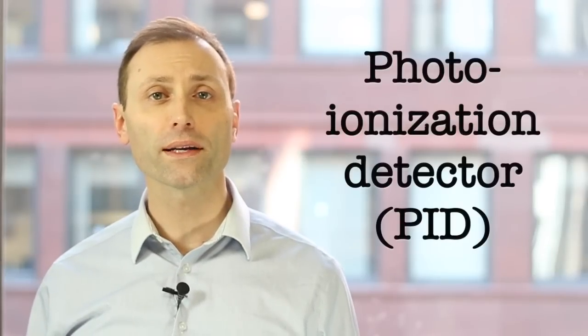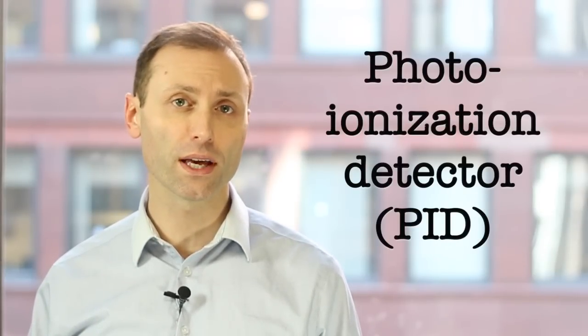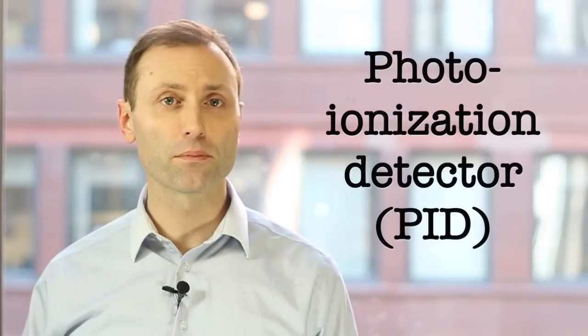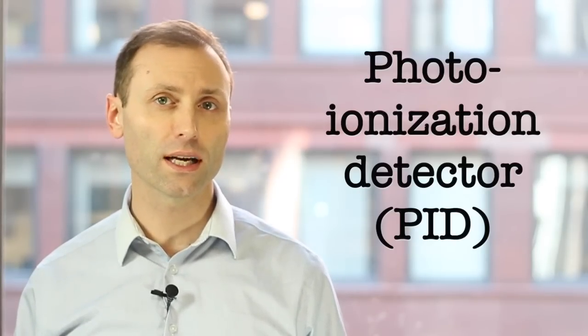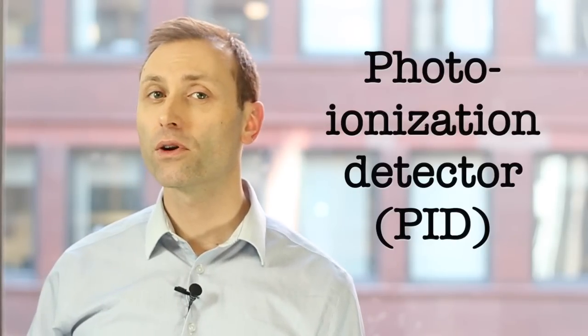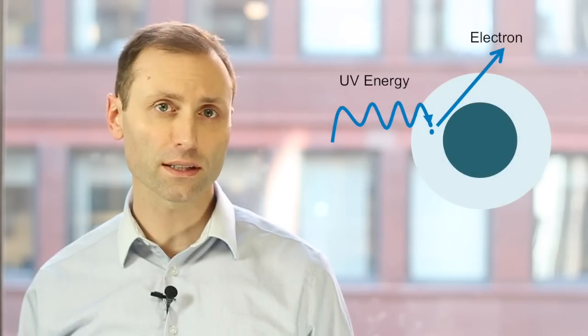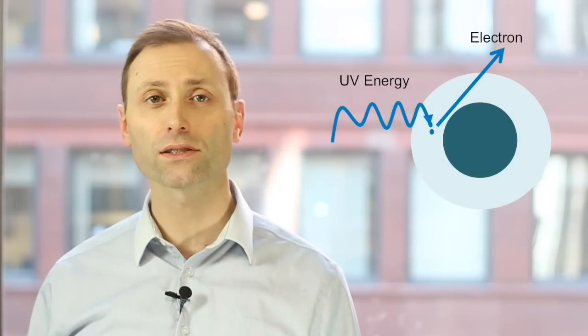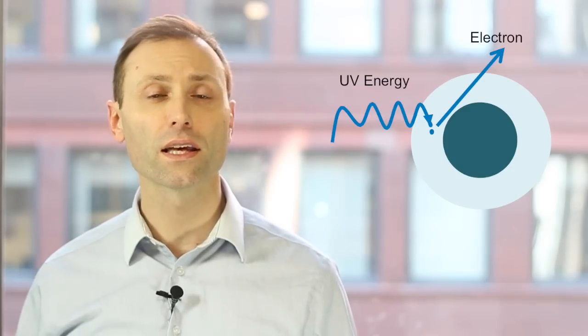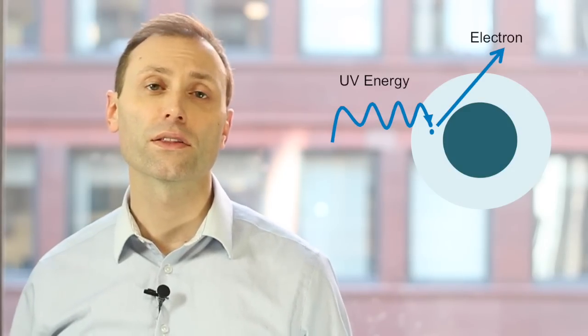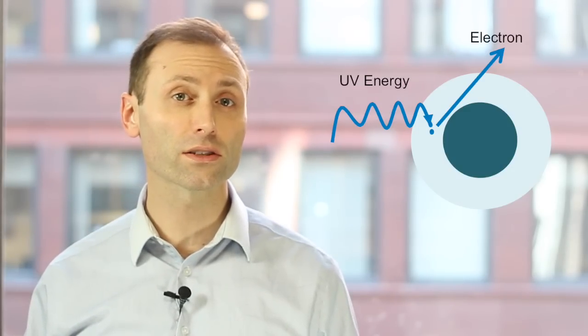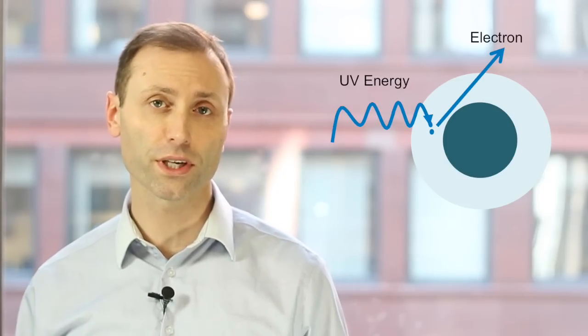A photoionization detector, which is also abbreviated PID, doesn't provide a breakdown of individual VOC concentrations. The term photoionization describes the process in which a high-energy ultraviolet light is used to remove electrons from VOC molecules, giving them a positive charge. The detector reads the ionic charge and converts it to a concentration.